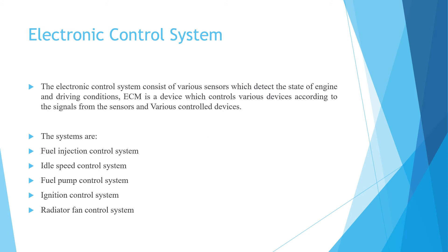The electronic control system consists of various sensors which detect the state of the engine and the driving condition. The ECM is a device which controls various devices according to the signal from the sensors. The control systems are: fuel injection control system, idle speed control system, fuel pump control system, ignition control system, and the radiator fan control system.